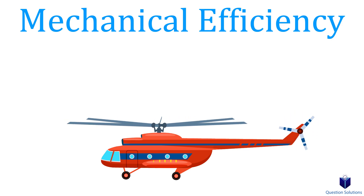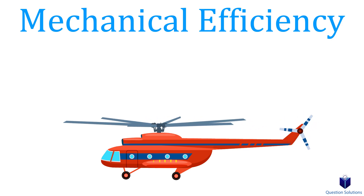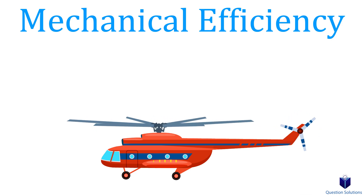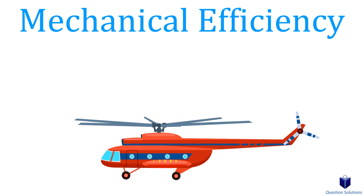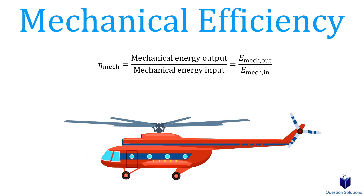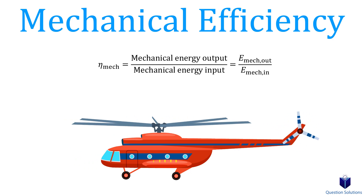Next, we have mechanical efficiency. Most of the time mechanical energy is transferred through a rotating shaft, so it's usually called shaft work. For example, a propeller receives shaft work from a motor; when it spins, the mechanical energy is transferred to the fluid, excluding frictional losses. Mechanical efficiency can be found using its equation, and if we have 95% mechanical efficiency, that means 5% of the mechanical energy is converted to thermal energy due to friction.